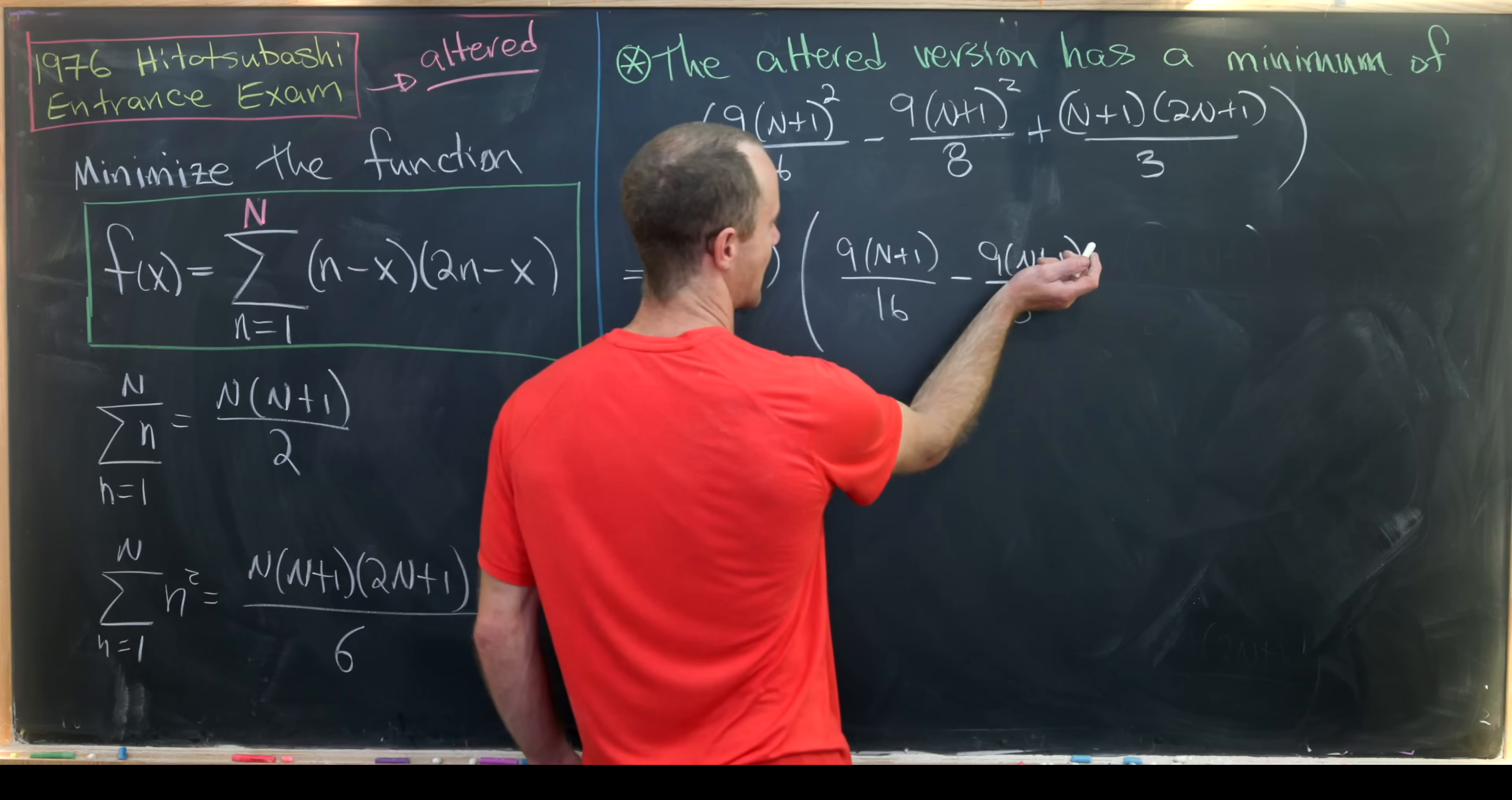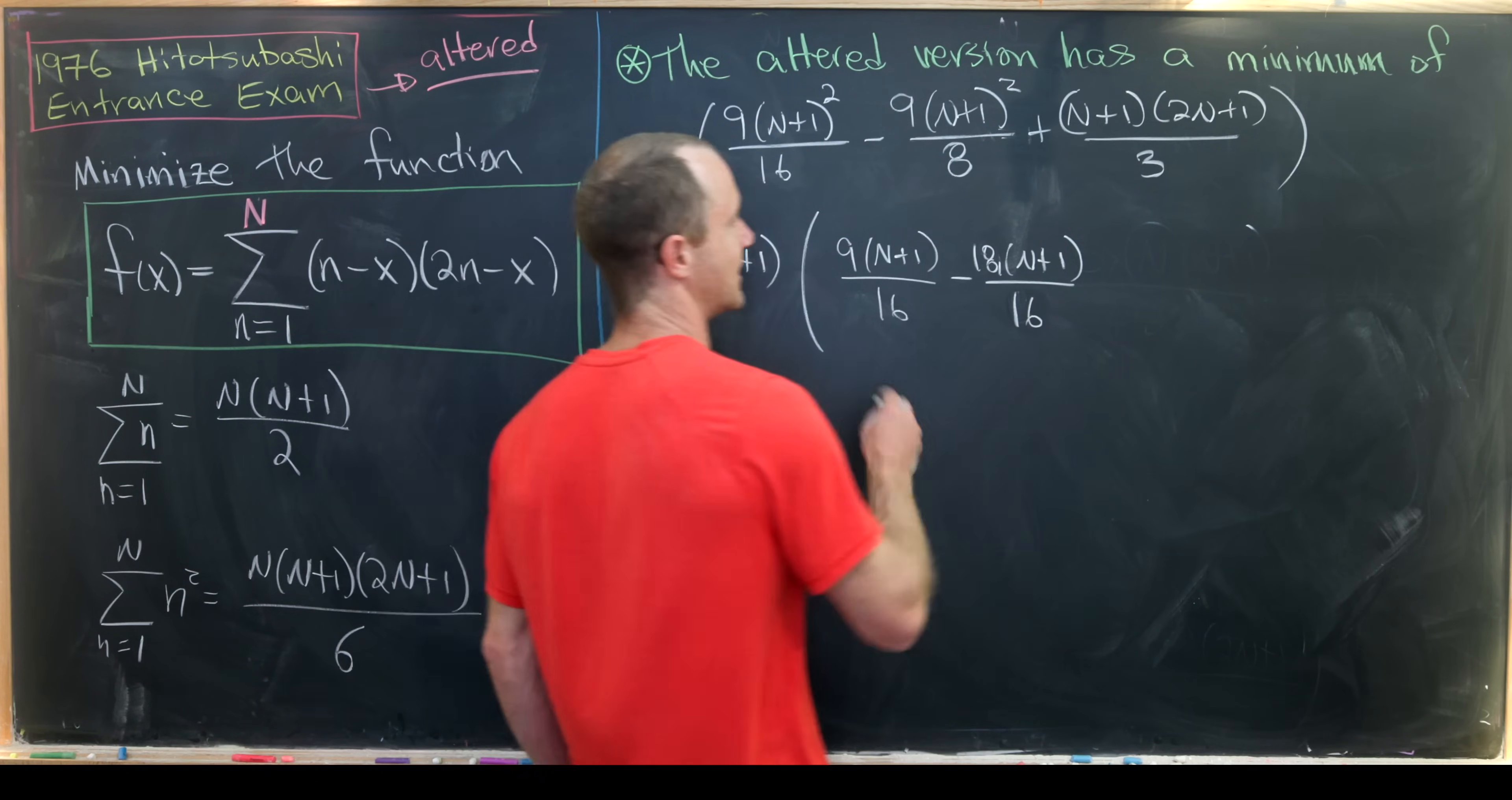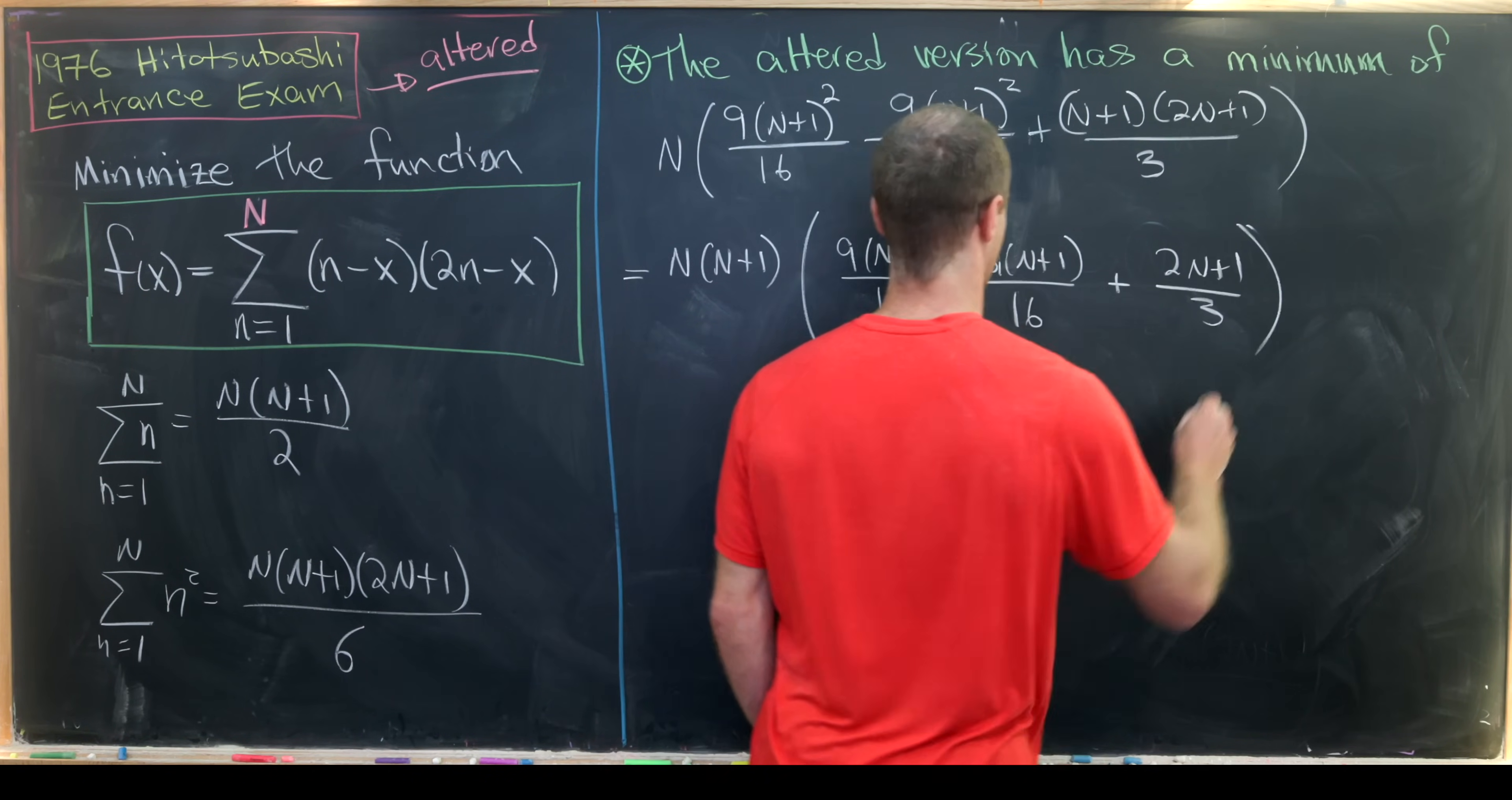Well we can actually simplify that by writing this as 18(N+1)/16. And then we'll have plus (2N+1)/3.